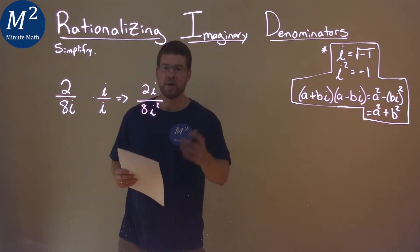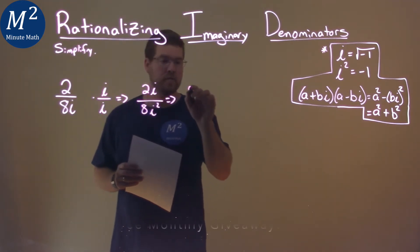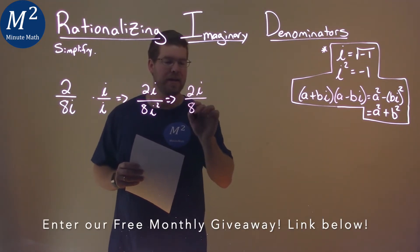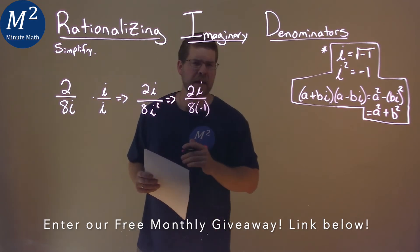Well, what's i squared? i squared is just a negative 1. So we have 2i over 8 times a negative 1. And let's simplify some of this.